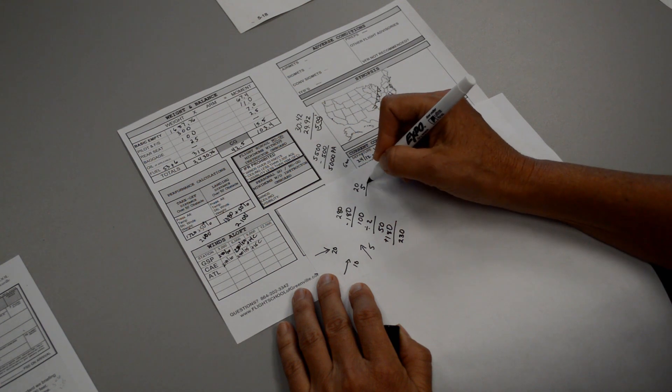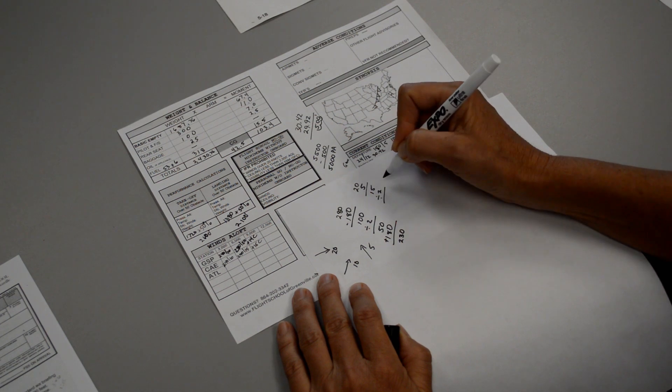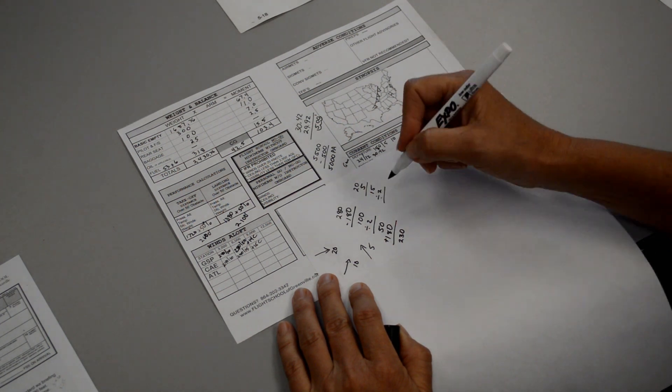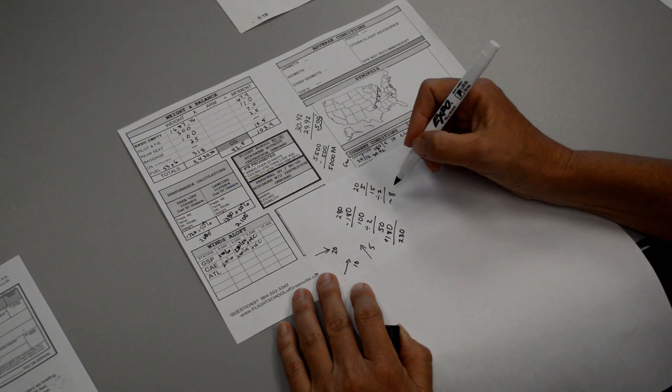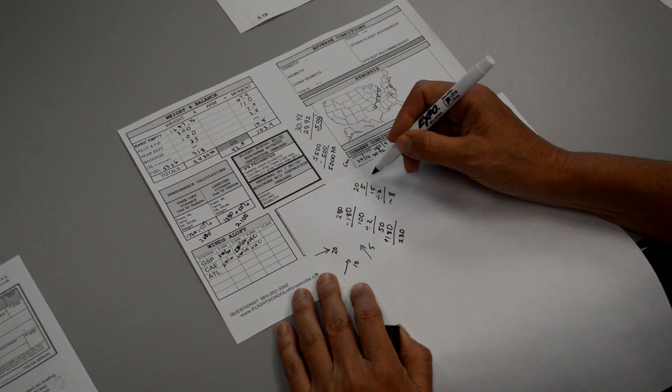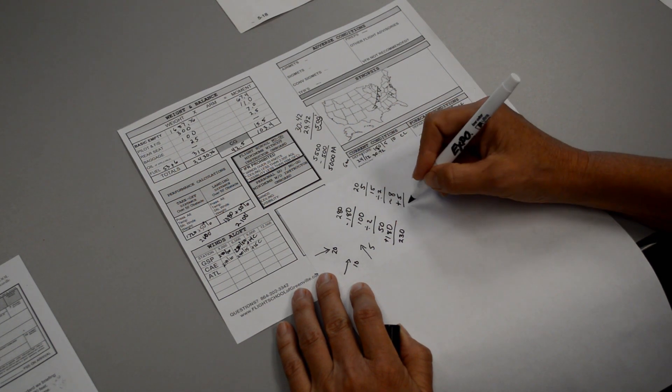So 20 minus 5 is 15. We divide that by 2, which is 7.5. We'll call it 8 to keep our numbers easy to work with. Then we add 8 back to 5. So 8 plus 5 equals 13.